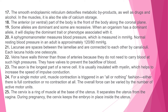Explanation 16: The pituitary gland synthesizes and stores many important endocrine hormones. Explanation 17: The smooth endoplasmic reticulum detoxifies metabolic byproducts as well as drugs and alcohol; in muscles it is also the site of calcium storage. Explanation 18: The anterior or ventral part of the body is the front of the body, along the coronal plane.